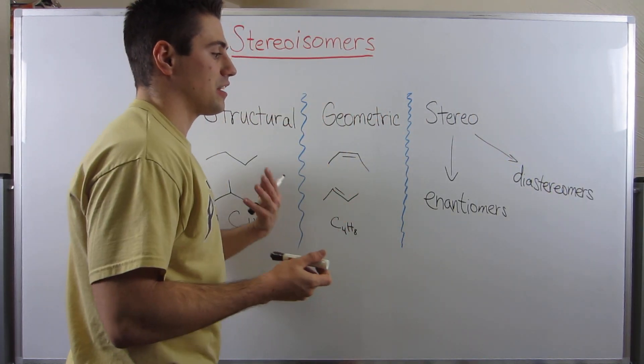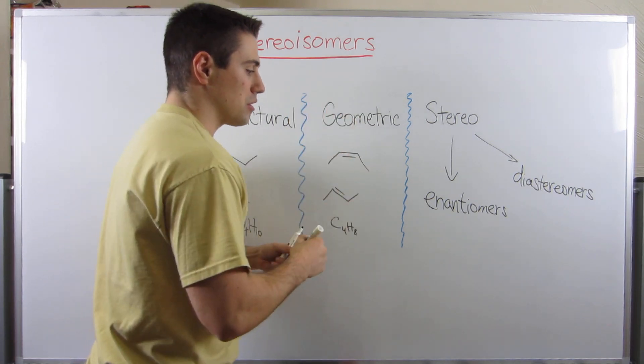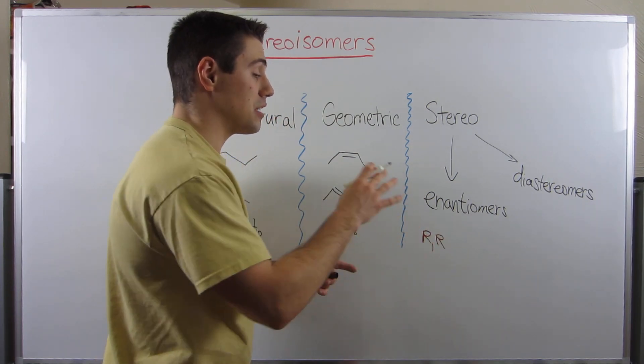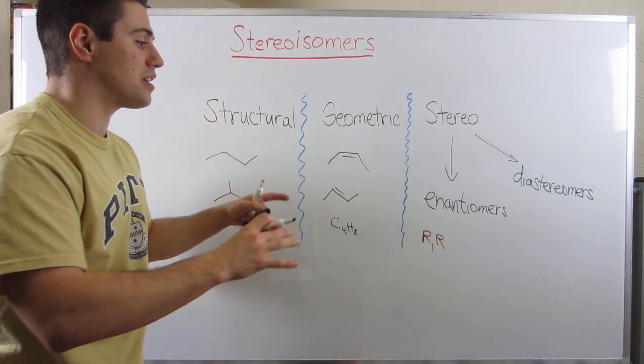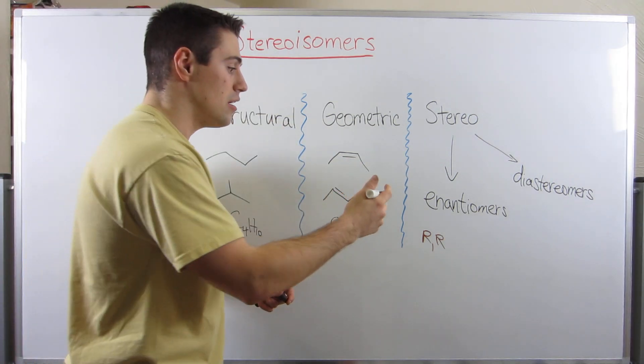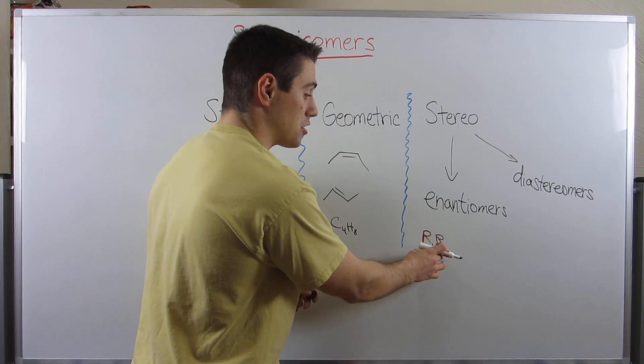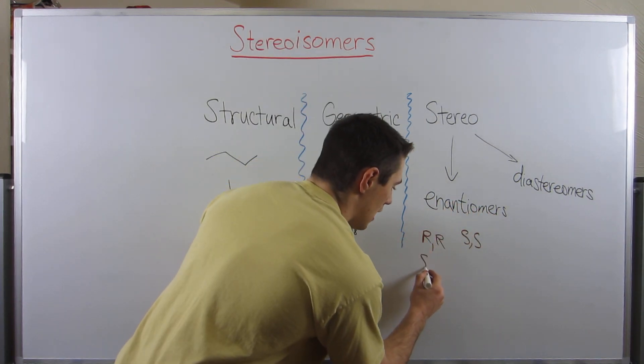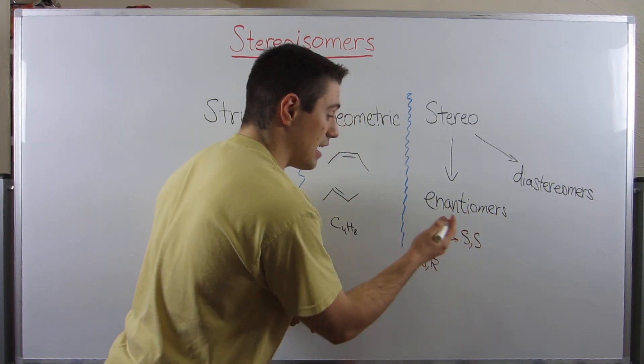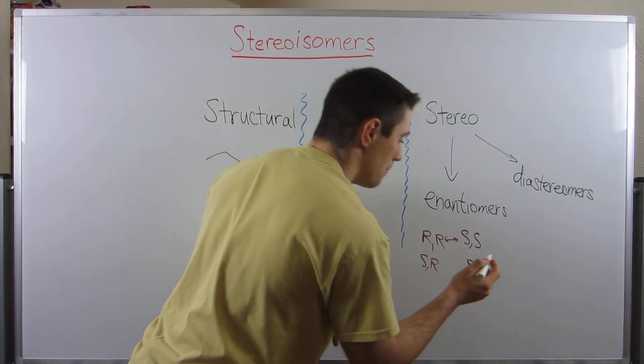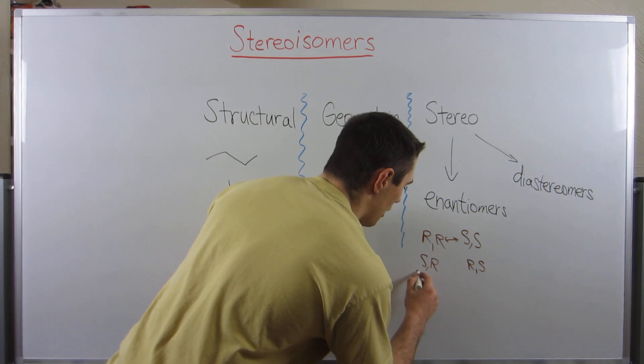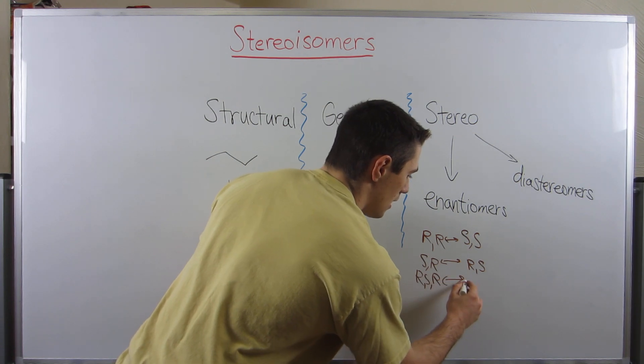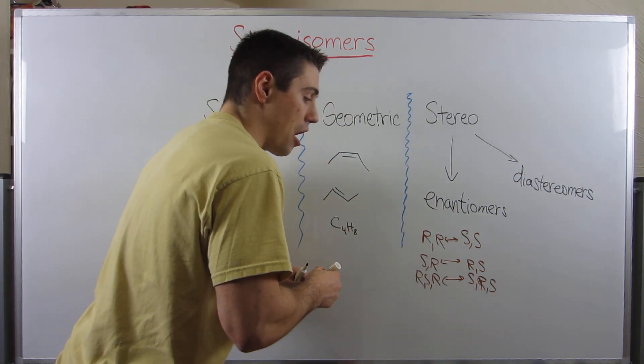Let me define these for you. Enantiomers - this is the one I feel like is the easiest. If you have a molecule with two stereocenters, R R, the enantiomer is the exact opposite. You take the exact opposite stereochemistry at each stereocenter and flip it. So the enantiomer for R R would be S S. If we had S R, the enantiomer would be R S. And one more example: if we had R S R, the enantiomer would be S R S.